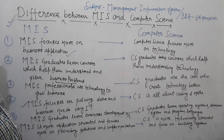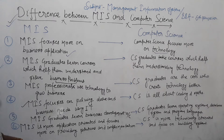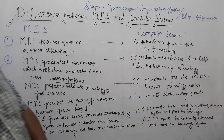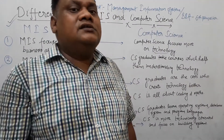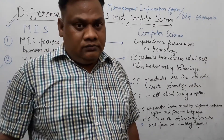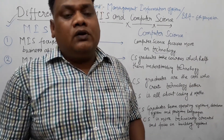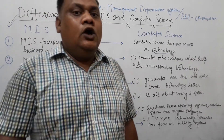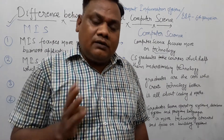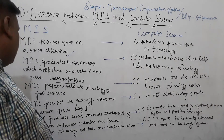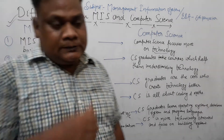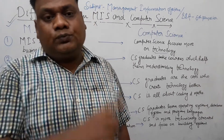MIS is more application-oriented and focused more on providing solutions and implementation. MIS is also more flexible. In MIS there are three levels: top level management, middle level management, and lower level management, which we have discussed in previous lectures. MIS is focused on providing solutions. The highest level, DSS, supports top-level management decision-making.